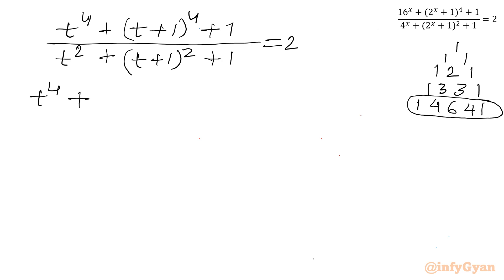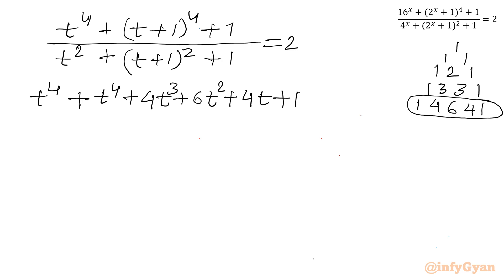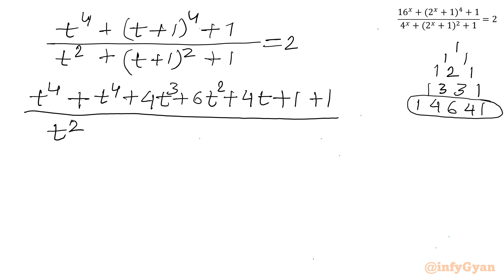Let us expand. t^4 as it is, plus the expansion of (t+1)^4: t^4 + 4t^3 + 6t^2 + 4t + 1, and last plus 1, all divided by t^2. For (t+1)^2 using (a+b)^2: t^2 + 2t + 1. Then plus (t+1), equals 2.